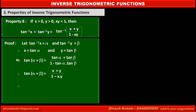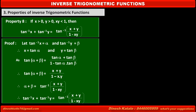Therefore, we can write alpha plus beta equal to tan inverse of (x plus y) upon (1 minus xy). Substituting the values of alpha and beta, we get tan inverse x plus tan inverse y is equal to tan inverse of (x plus y) upon (1 minus xy).